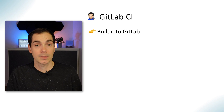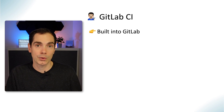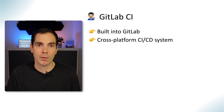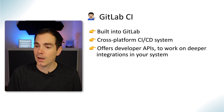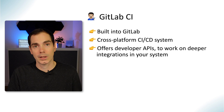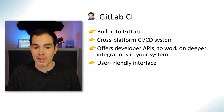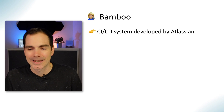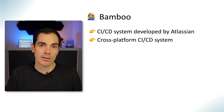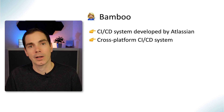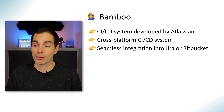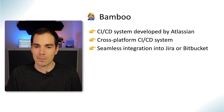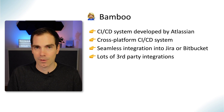GitLab CI is built into GitLab — if you're using GitLab, you should use GitLab CI because it's built in. It's also a cross-platform CI/CD system that can run on all operating systems. It has a great developer API for deeper integrations and a user-friendly interface. Bamboo is a CI/CD system developed by Atlassian, also cross-platform, running on Microsoft, Linux, or Apple. It has a seamless integration with Jira and Bitbucket since it comes from Atlassian, making it a natural choice if you're fully on Atlassian products, plus many third-party integrations.